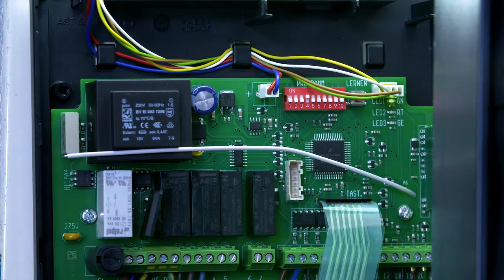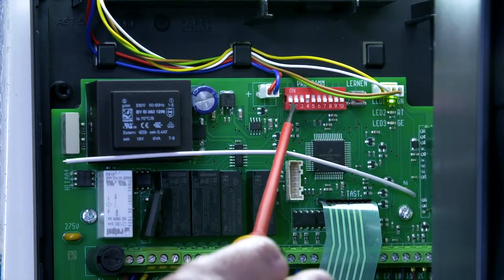Finally once the door is set to the correct opening and closing positions, turn on dip switch one. This turns the operator into impulse control.